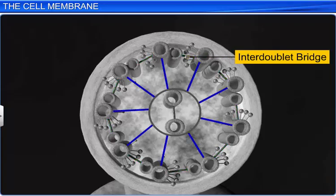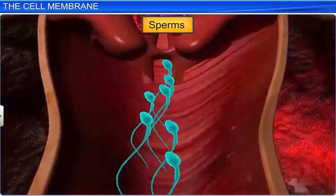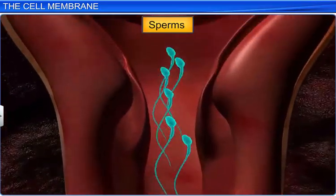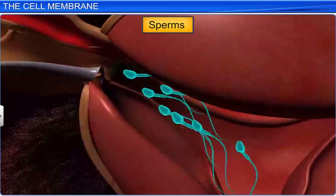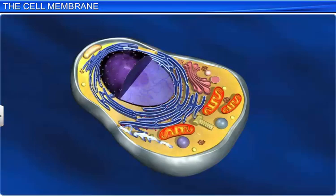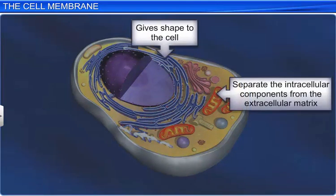The cilia and flagella help the cell propel or move the fluid surrounding the cell, thus helping in motility. While the cell membrane gives shape to the cell, separates the intracellular components from the extracellular matrix, and also plays an important role in the transport of substances across the cell.